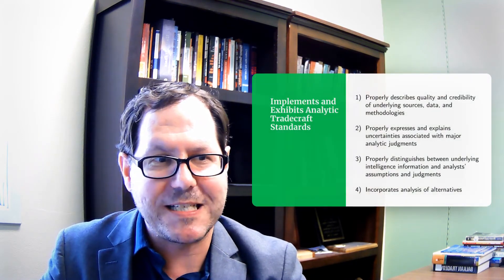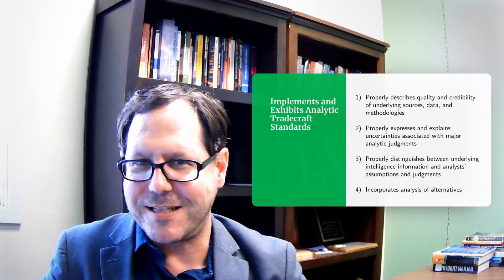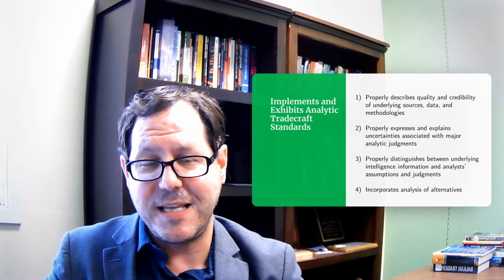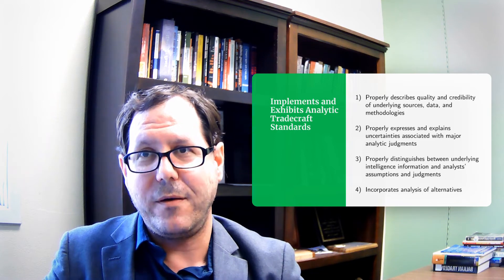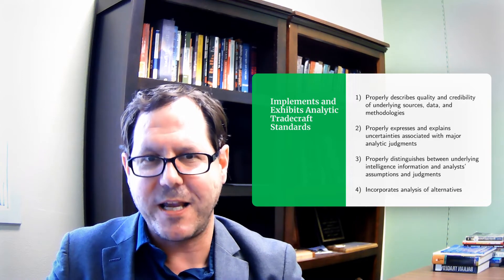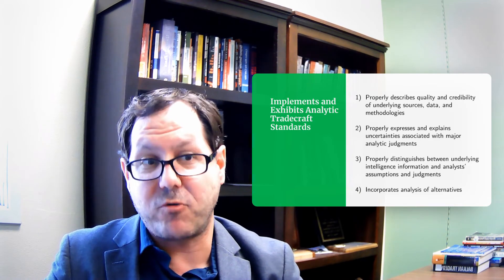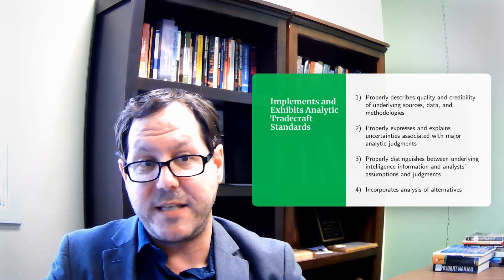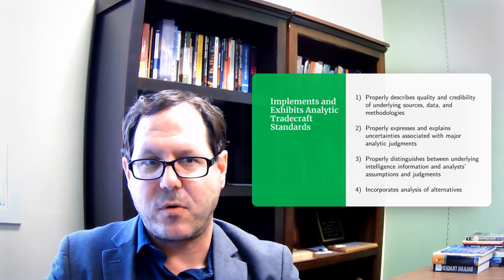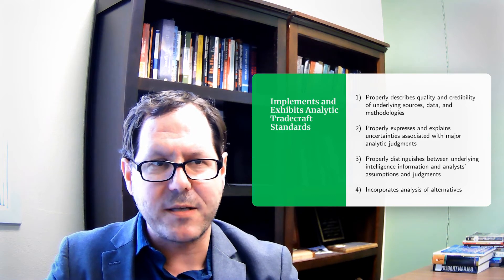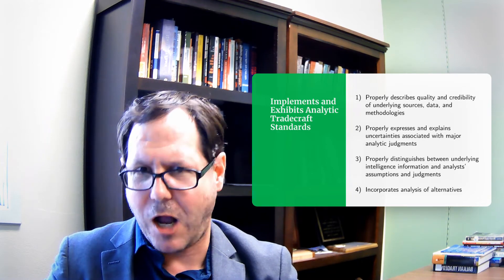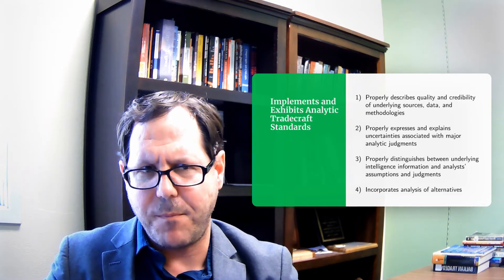The next standard is implementing and exhibiting analytic tradecraft standards. There are about nine of these, which I'll tackle in a subsequent video, but I want to introduce them here because they describe what an analytic product should look like. First, properly describe quality and credibility of underlying sources, data, and methodologies — cite your sources and make sure uncertainty about those sources is communicated clearly. Second, properly express and explain uncertainties associated with major analytic judgments, including how to talk about probabilities and levels of confidence.